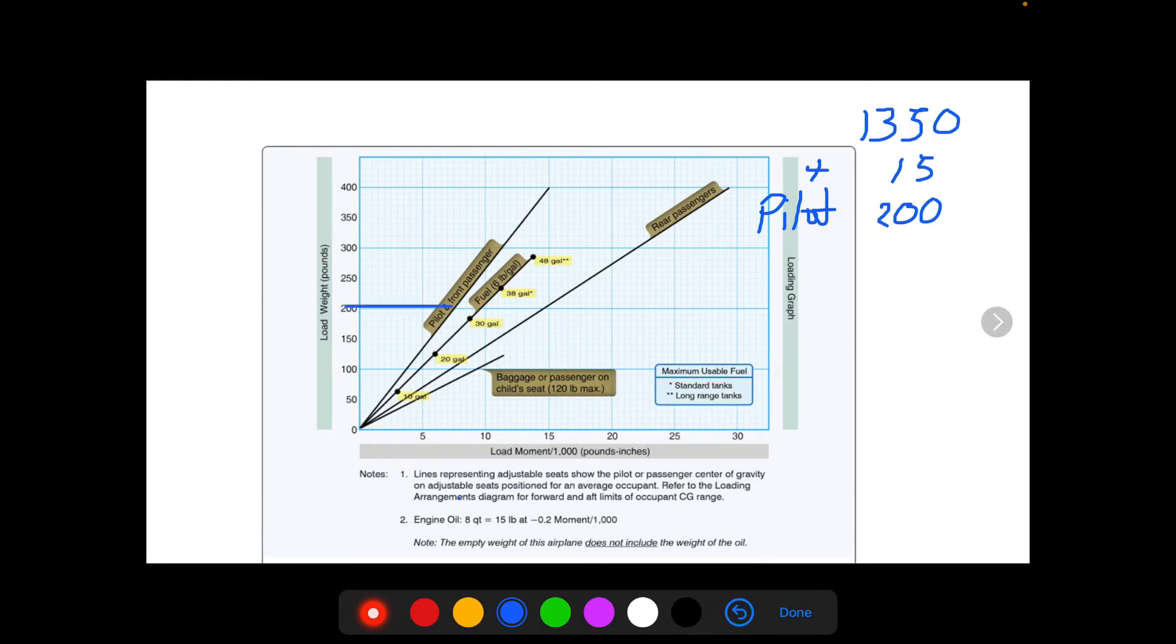And we're going to find the weight over here on the y-axis, so we find 200 and we draw a line until it intersects this pilot in front passenger diagonal line. Where that intersects, we're going to draw a line straight down to the x-axis and we're going to read off our moment over a thousand. This is about halfway between five and ten, so that's seven and a half.